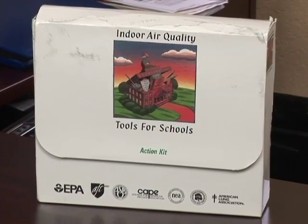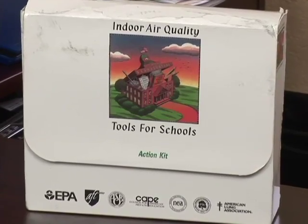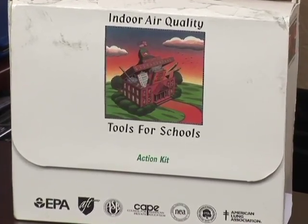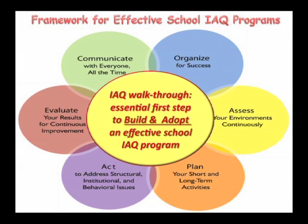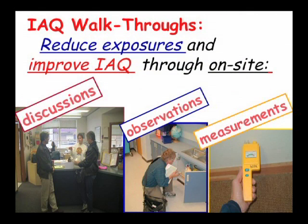The Environmental Protection Agency's indoor air quality tools for schools program has outlined a six-element framework for effective school IAQ programs. The walkthrough evaluation is a key component to be accomplished early on in the process of building and adopting your school IAQ program. Ultimately, walkthroughs involve the on-site communication, observations, and measurements necessary to plan improvements for IAQ and result in healthier air for staff and students.